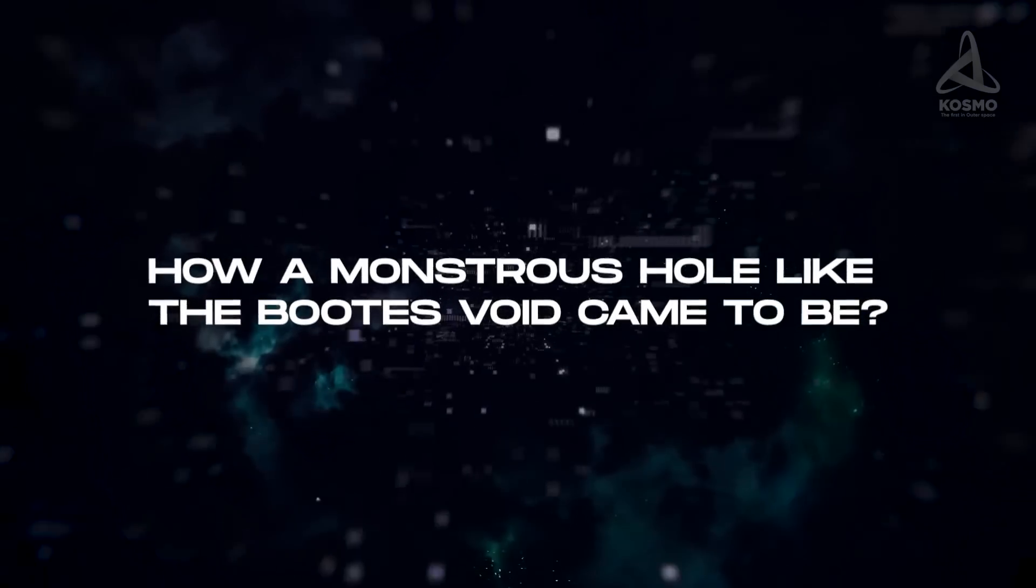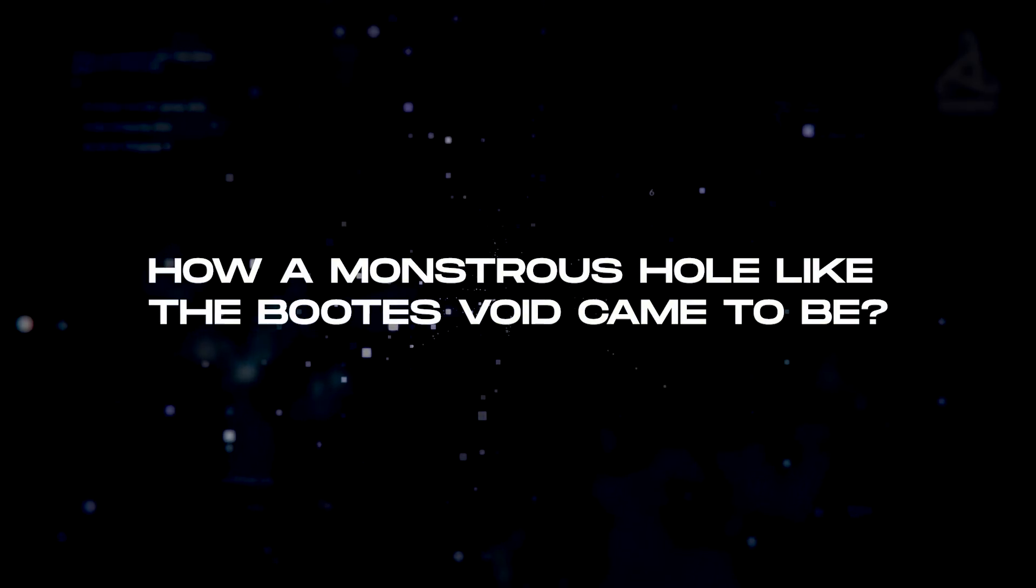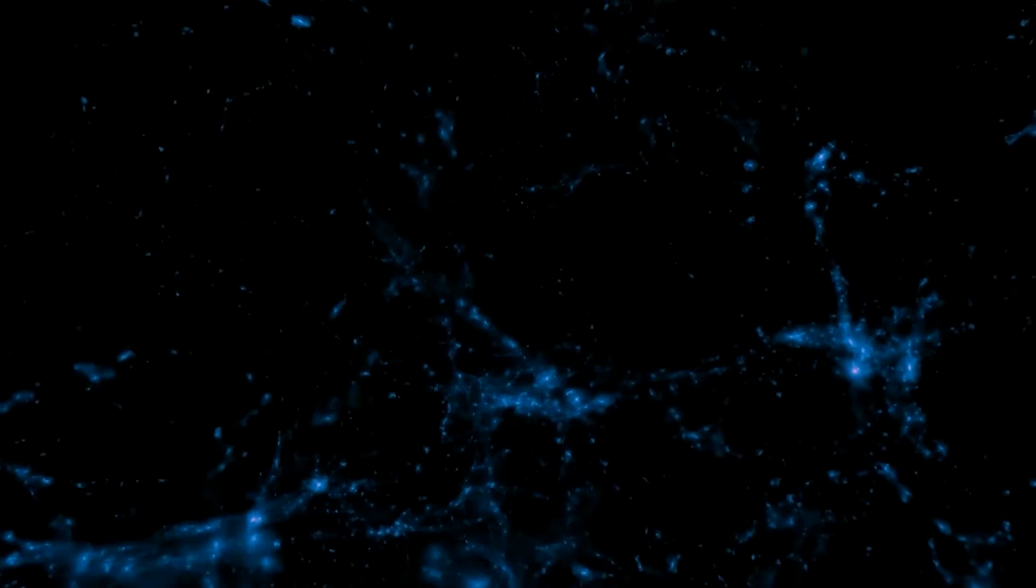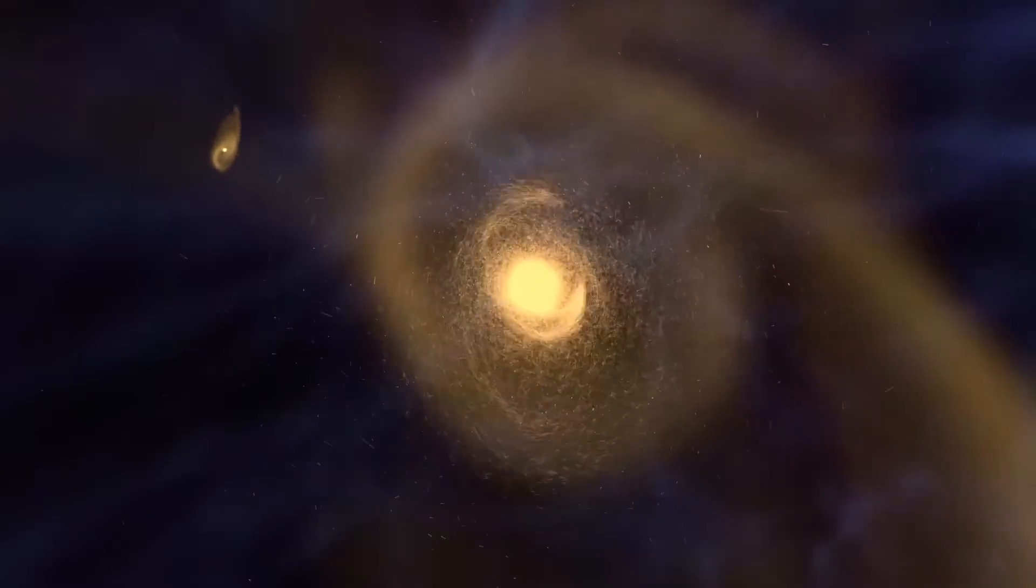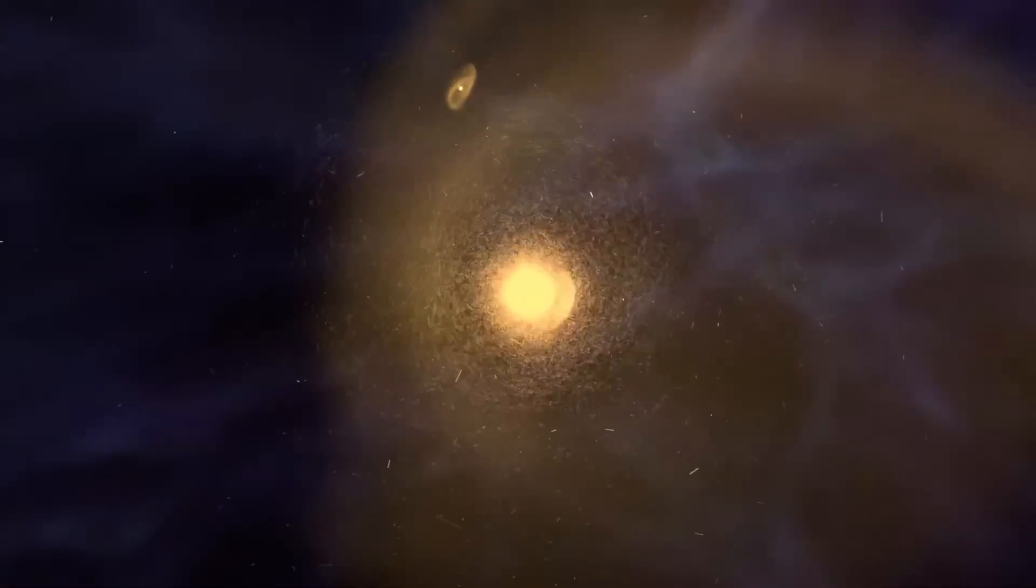At this point, you are probably wondering how a monstrous hole like Boötes Void came to be. Scientists have been trying hard to explain the origin of this anomalous region of space. Their computer models suggested that smaller voids, which are much more common, are caused by galaxies drawing closer to one another on account of gravitational attraction. This causes neighboring regions to empty out, and because the process is self-reinforcing, it tends to snowball.